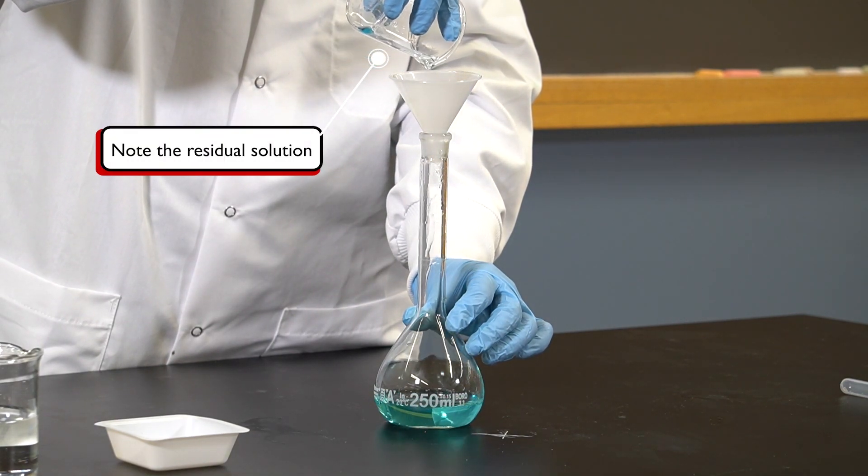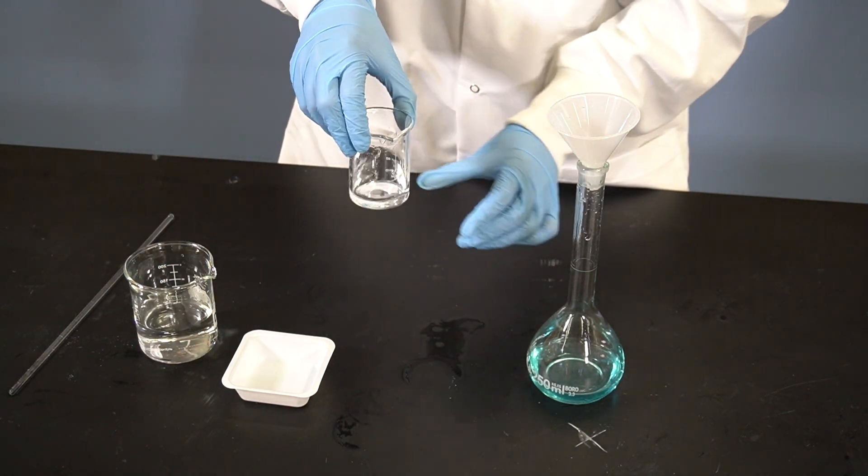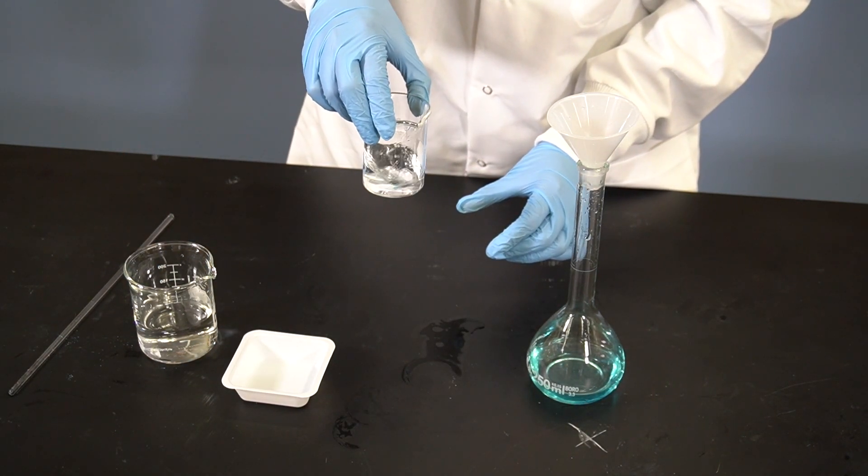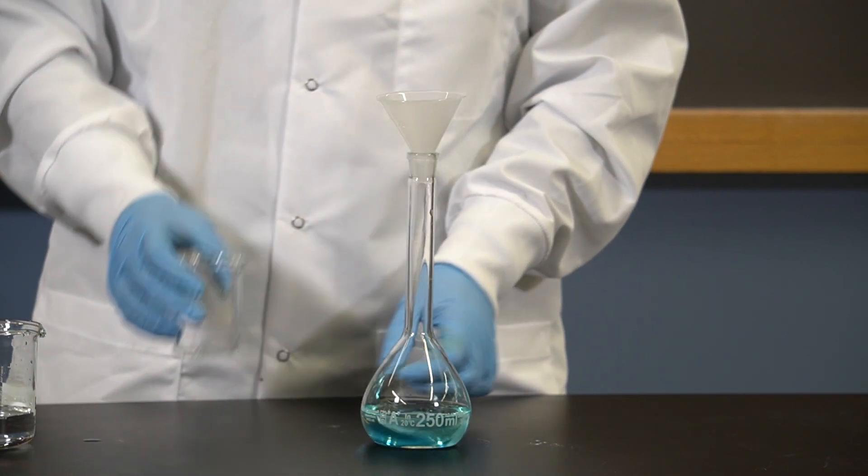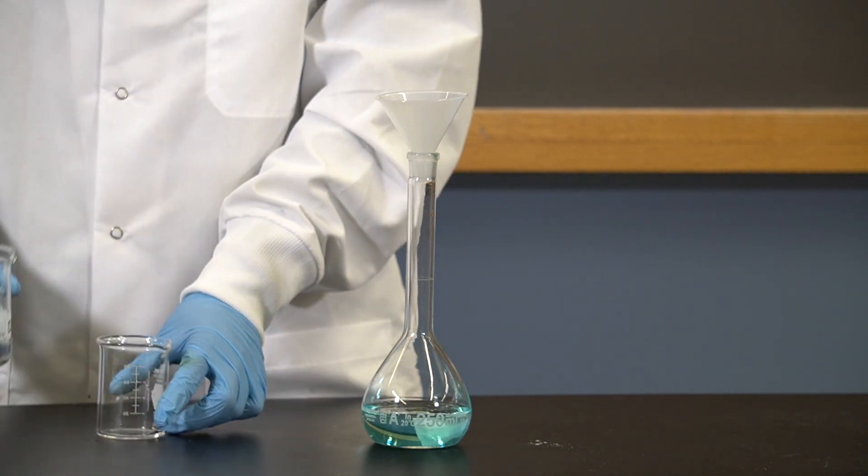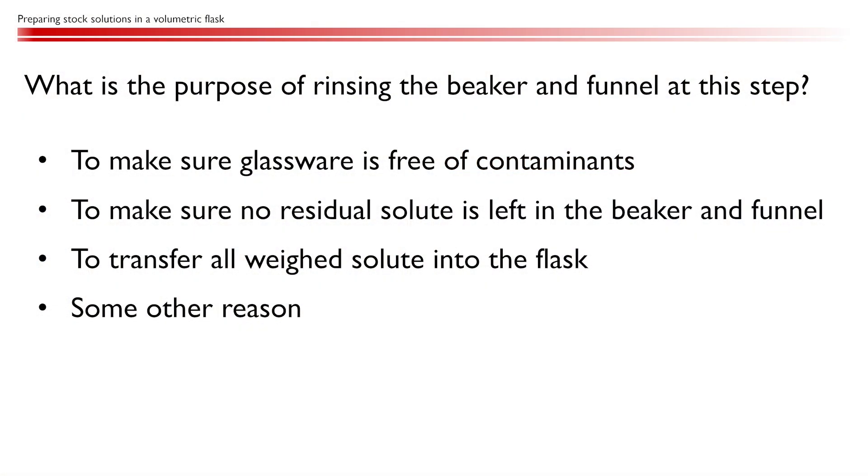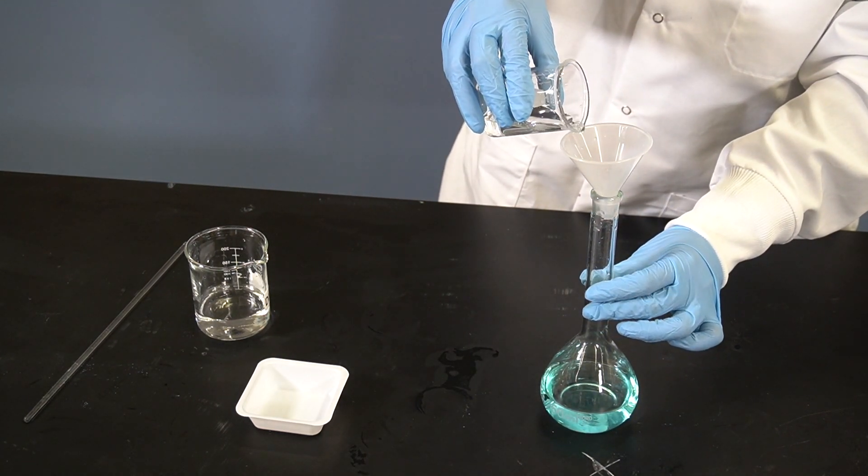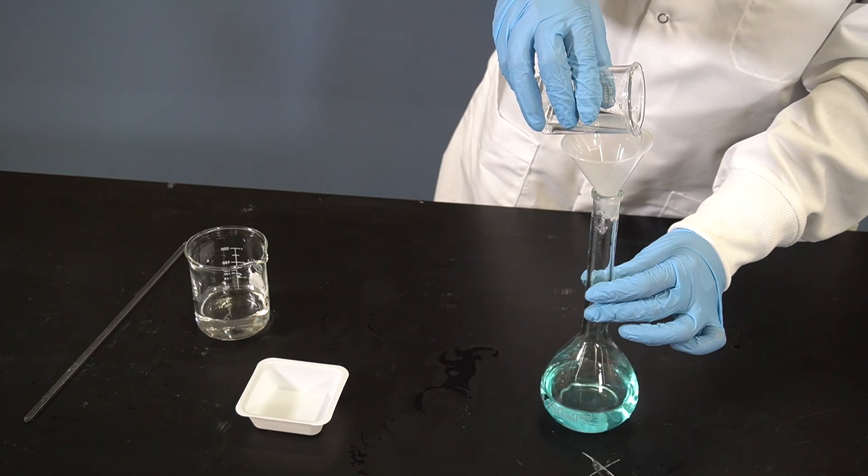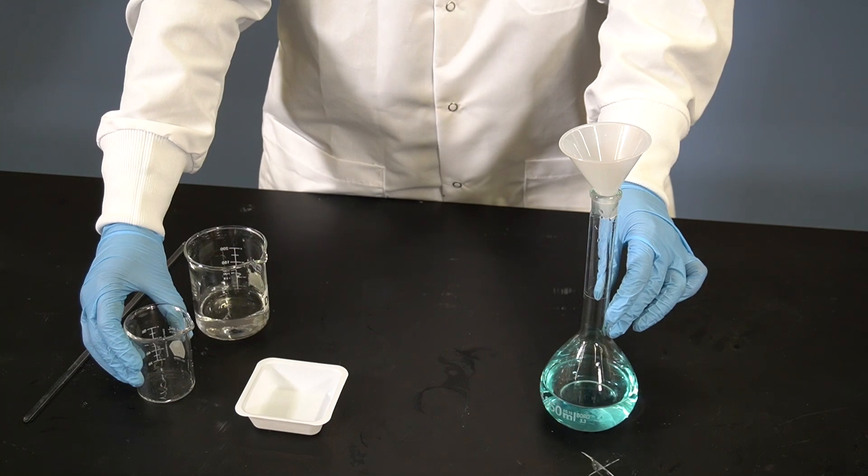Now, while most of the solute has been transferred into the flask, a very small amount is left behind in the beaker and funnel. So, we must rinse the beaker several times with small amounts of solvent and add the rinse to the flask through the funnel. Ensure that you are rinsing only with small amounts of solvent and repeat two to three times. What is the purpose of rinsing the beaker and funnel at this step? We're rinsing the beaker and funnel to make sure all of the solute is transferred and none of it is left behind. It is not enough to measure the mass precisely. We need to make sure that all of the solute gets into the flask.